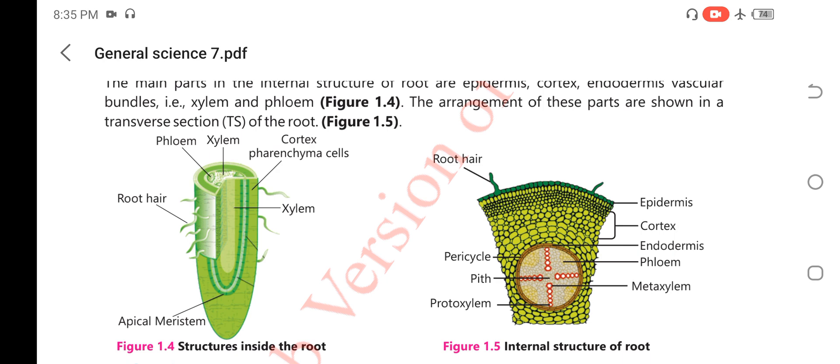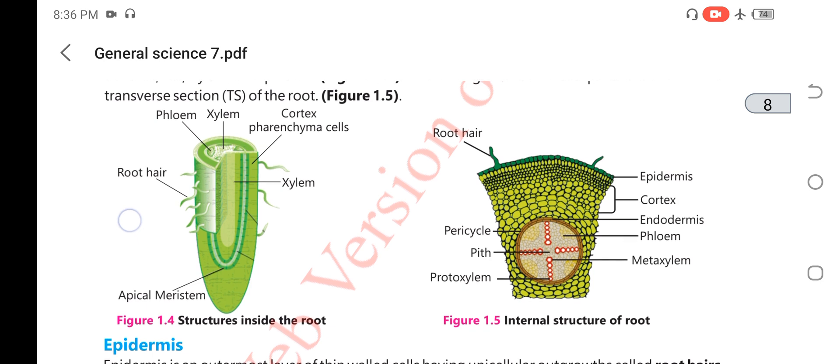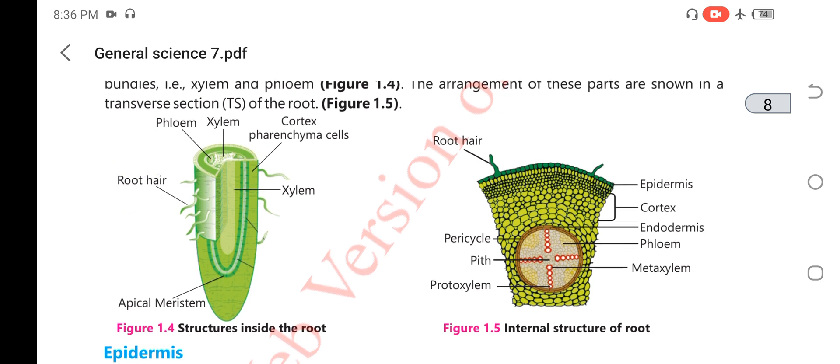This is the structure inside the root that consists of root hairs. These are the root hairs, and next one this is the epidermis. Epidermis have root hairs that are helpful for the absorption of more water from the soil.